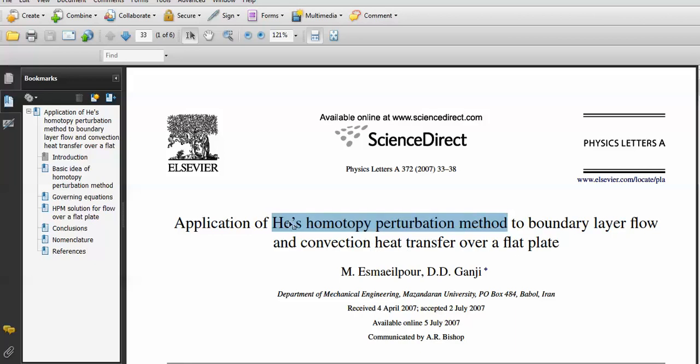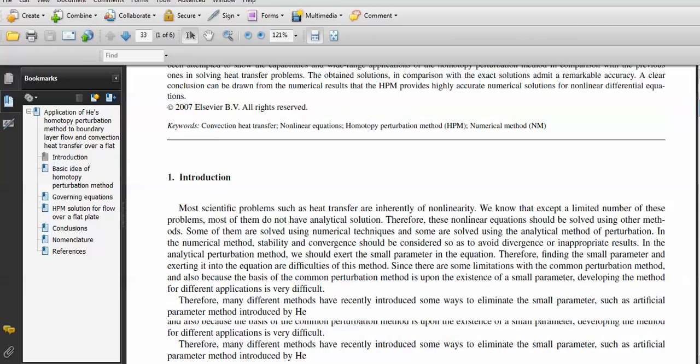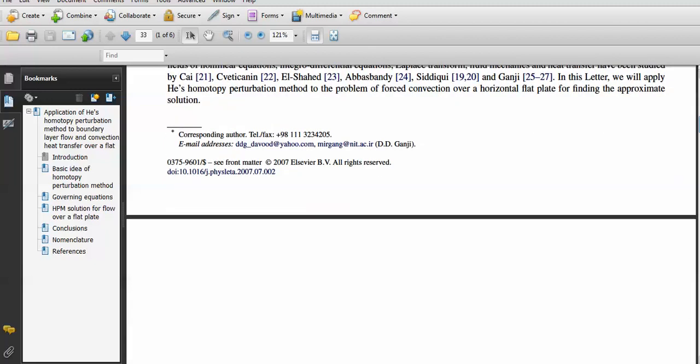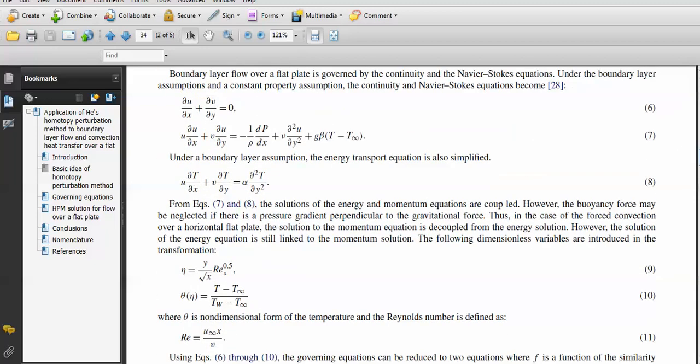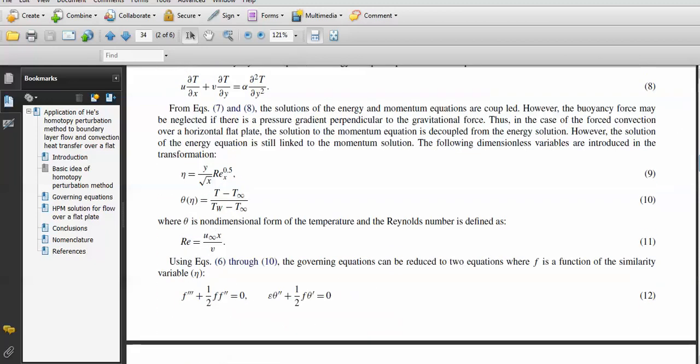Today I am going to construct a code of this paper. The paper contains two different types of equations. First is the Navier-Stokes equation, second is the heat transfer equation, the energy transfer equation. After using the similarity transformations, he is able to get two equations: the first equation is this and second is this.